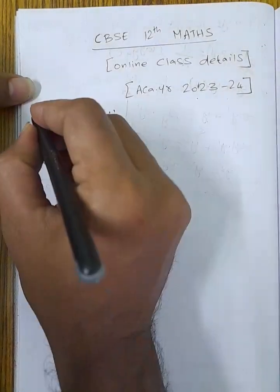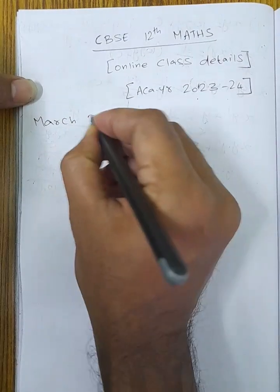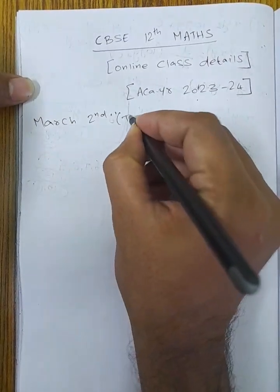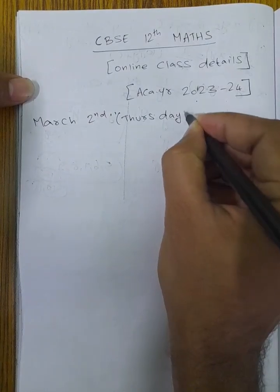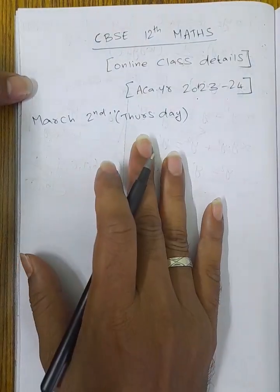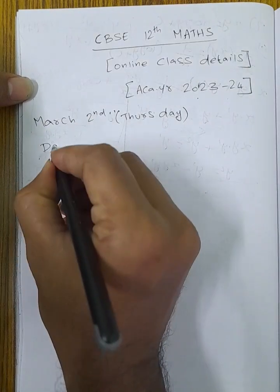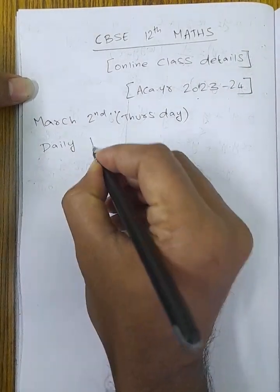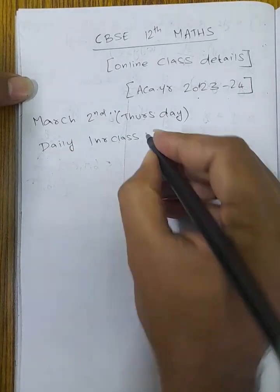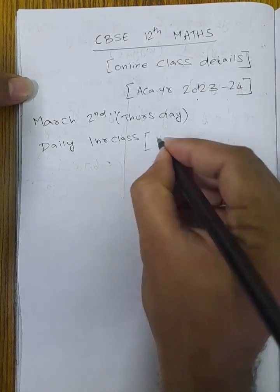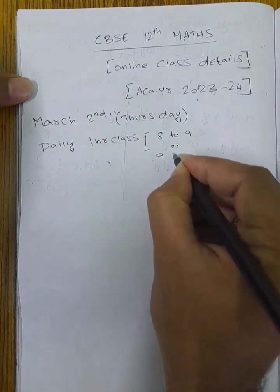Class details: starting March 2nd, Thursday. Daily 1 hour classes. Timing: evening 8 o'clock to 9, or 9 to 10.